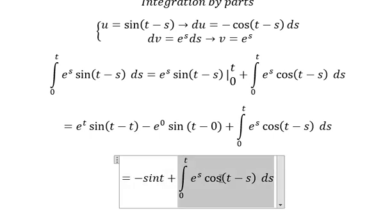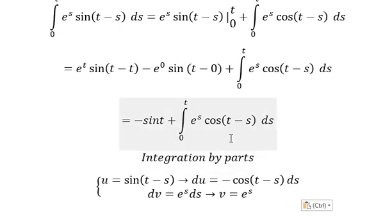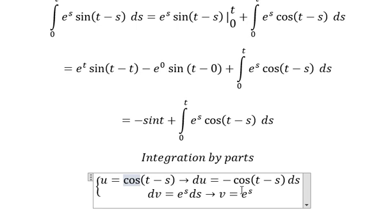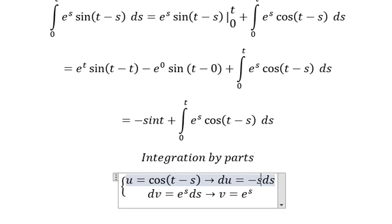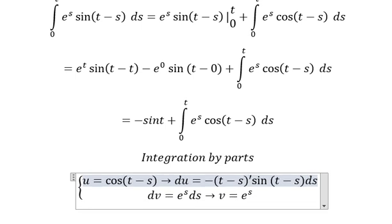Now let's go to this one. We have cosine of t minus h, so the first derivative of this one gives negative sine of t minus h. This one is a constant so you get zero, this one we have one. Negative and negative gives positive.